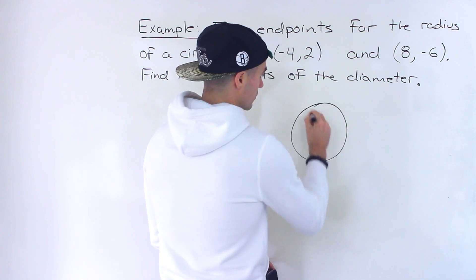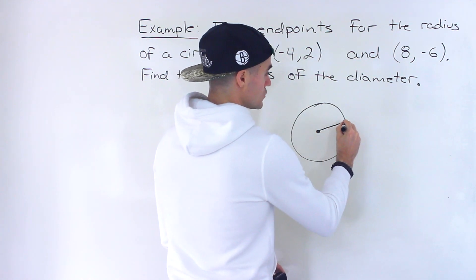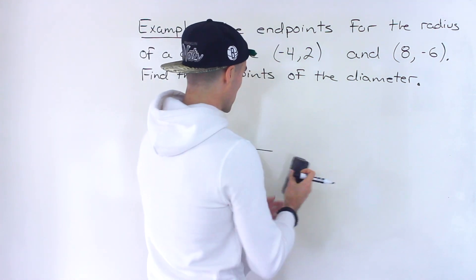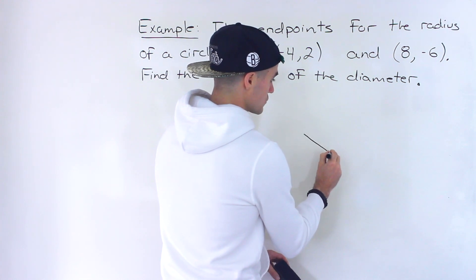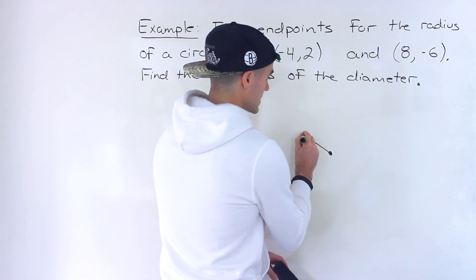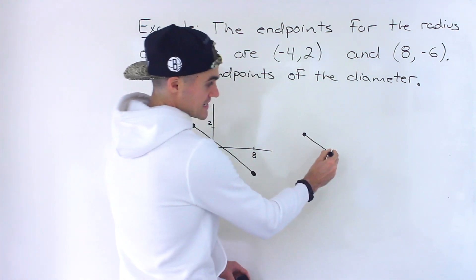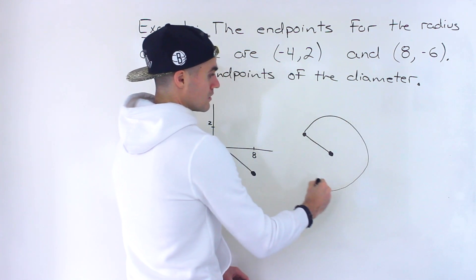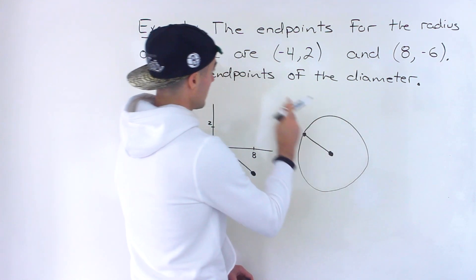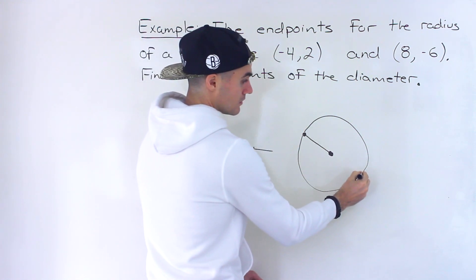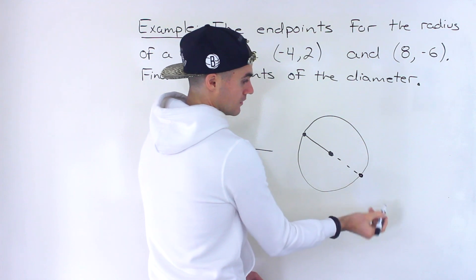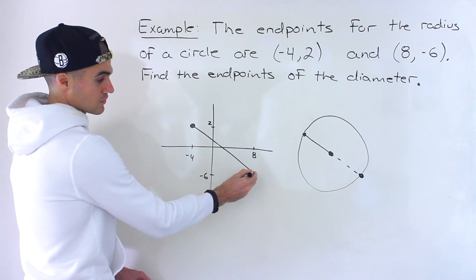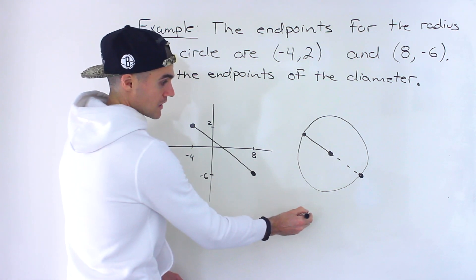Whenever we have a circle, the radius is always from the center to one of the edges of the circle. So if we take this line and redraw it zoomed out — if this is the center of the circle, then the circle looks like that, and the endpoints of the diameter are going to be here. That's what we're solving for.